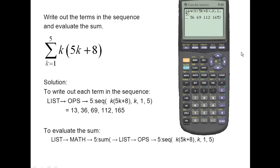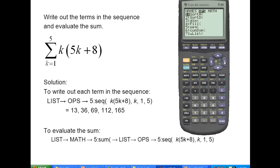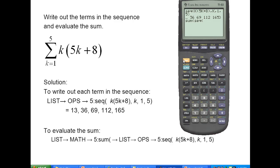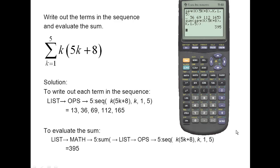Next let's evaluate the sum by embedding the sequence within the sum function. Enter the list with Second and Stat, scroll over to Math, and use the fifth option. Then embed the sequence function: enter the list again, scroll to operations, select the fifth option, enter the function k(5k + 8), variable k, index begins at 1 and ends at 5. Close the sequence function and close the sum function. We get a sum of 395. We'll see you next time.